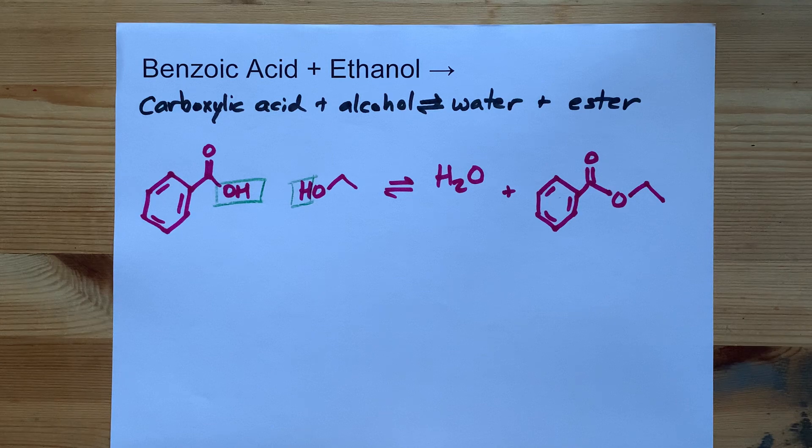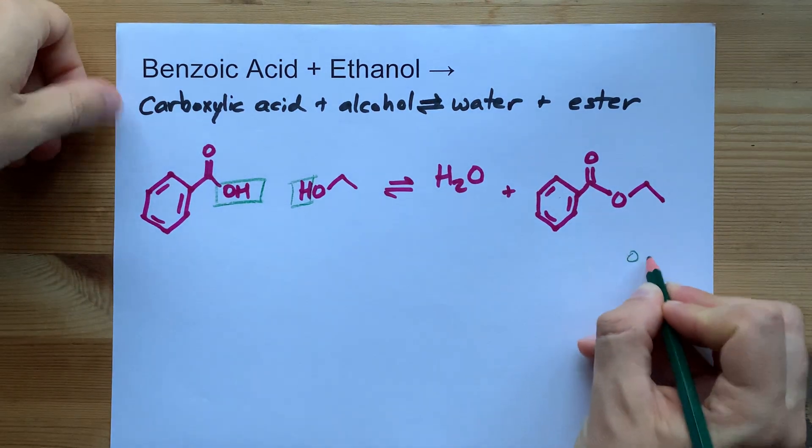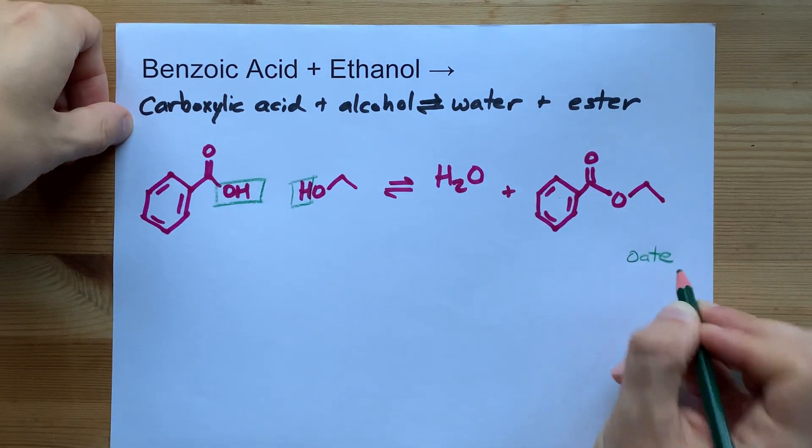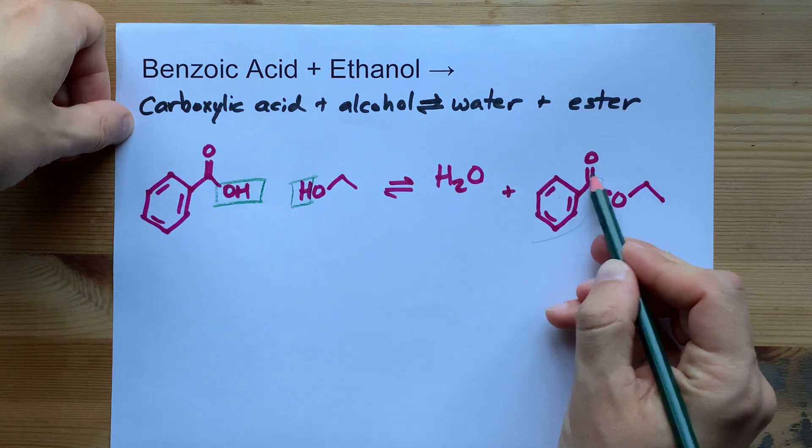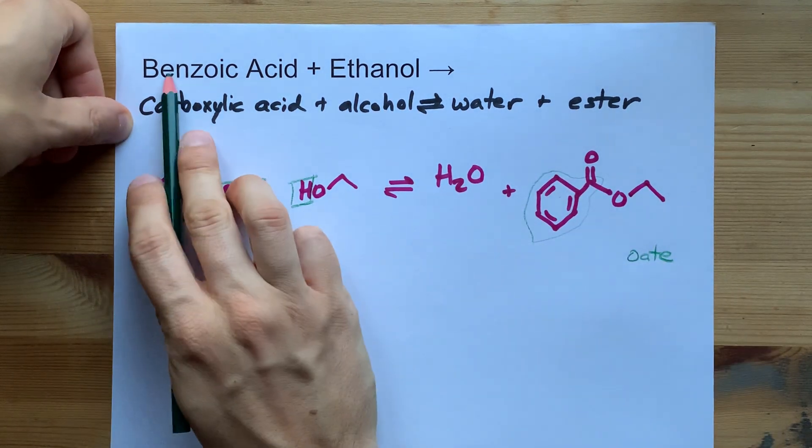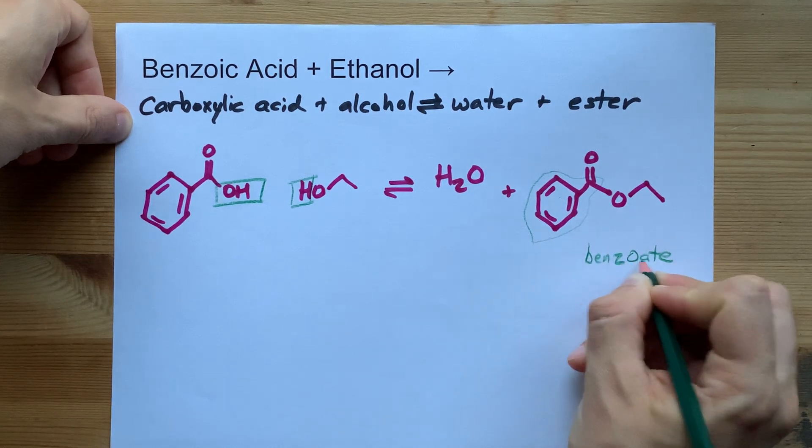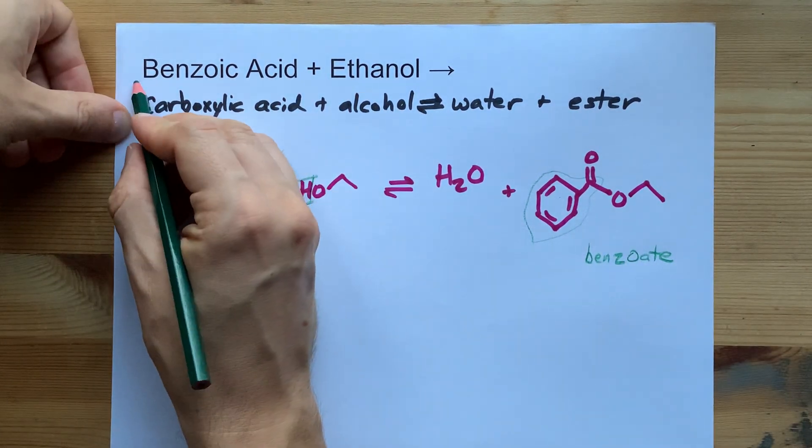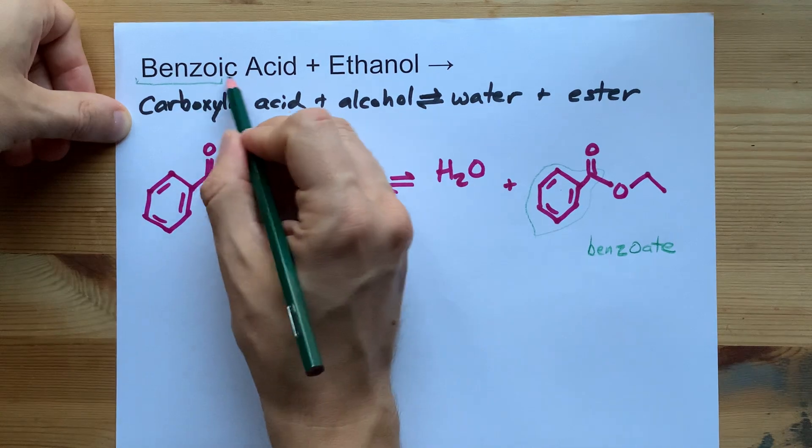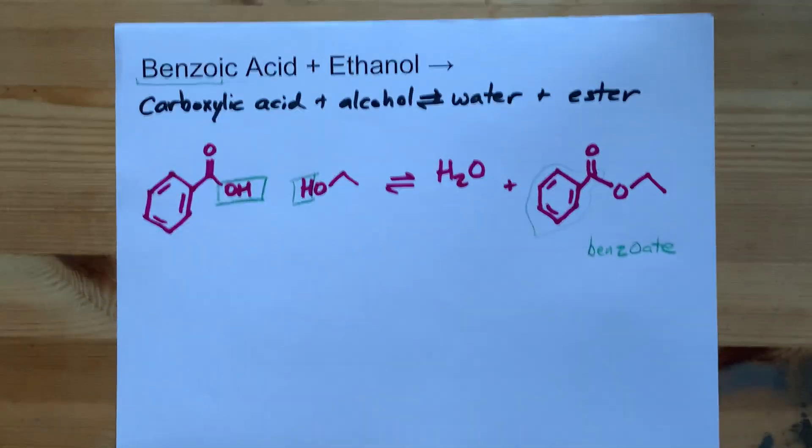Then you got to be able to name this. The oate portion of an ester's name comes from the part connected to the double bonded O. Benzoic acid yields you benzoate. It's usually this same root that gets changed to oate when you make the ester.